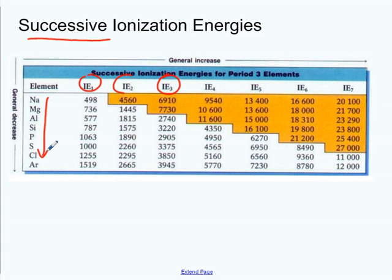The energy needed to take away successive electrons, always starting with the highest energy valence electron, and then moving in closer to the nucleus. Make a little observation for yourself. Do you see a simple pattern? When you go from the first to the second, to the third, to the fourth, to the fifth, what's happening to the ionization energy for every element?